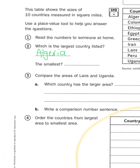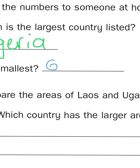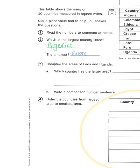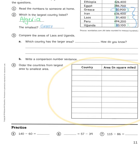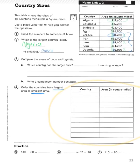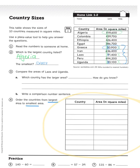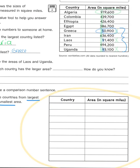So the smallest country in terms of area out of these ten is Greece. There are larger and smaller countries in the world — we're only looking at this selection. Algeria is the largest and Greece is the smallest. When we organize the information from largest to smallest, we start with the largest number on top, which is Algeria with 919,600 square miles.